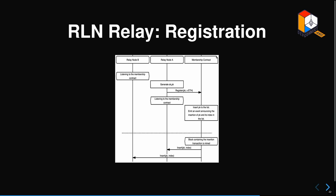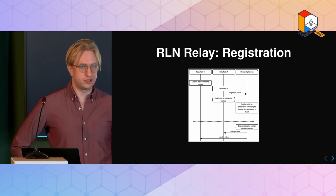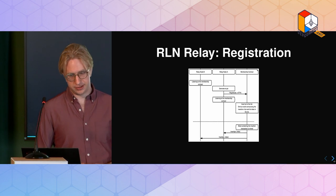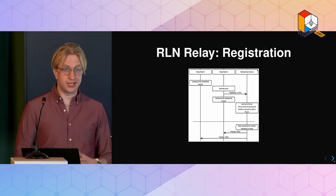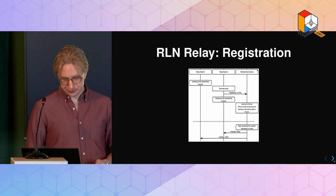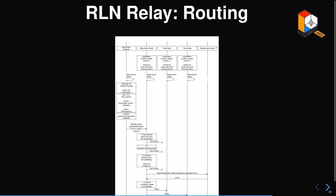For registration, nodes have to listen to the membership contract because they need to keep track of the Merkle tree themselves. They generate a secret key / public key, register through the contract, the contract gets updated by inserting it into a tree, then you wait for the block containing that insertion to be mined, events are emitted to all nodes, and they update their state. For routing, each node needs to keep track of a nullifier map metadata to detect double signaling, and also keep track of epoch - roughly in sync with real time.